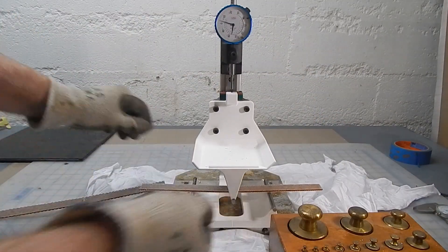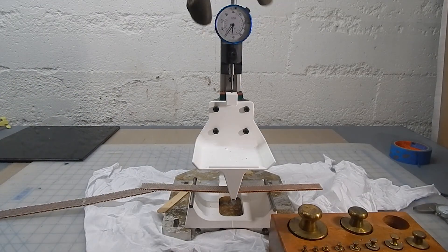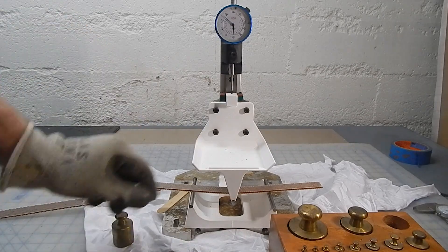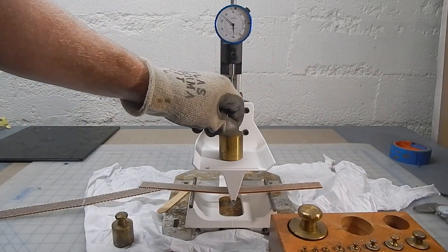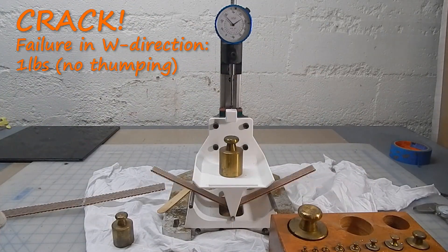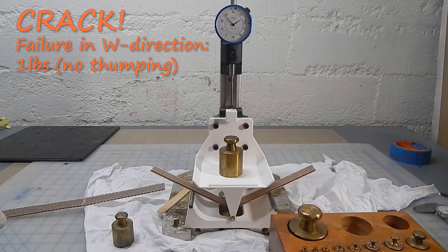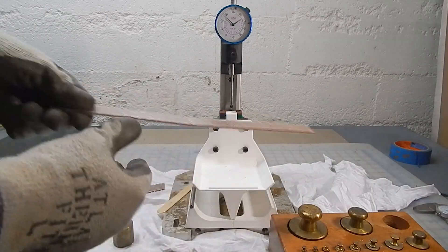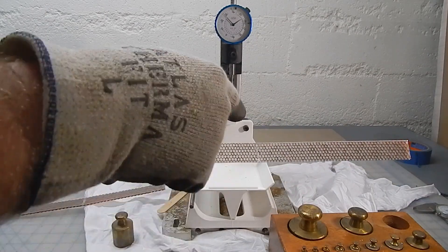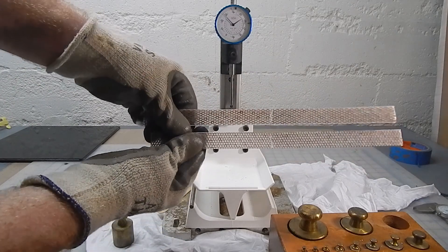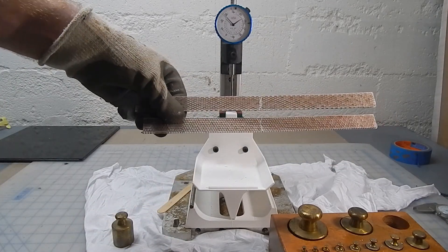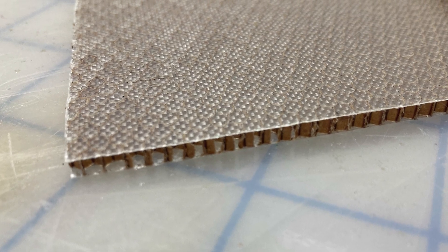This is the W direction. These are the same width strips. So with 1.5 pounds it bends a lot more than the other one did. When I put a pound on there, pretty much breaks right away. Without any tapping or thumping. So in the W direction it's way less strong. And that makes sense because the strips, there are no actual honeycomb cell edges running in that direction. Everything is at a 45. And so it's less stiff and it's less resistant to shear.